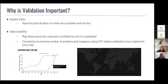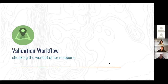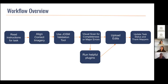Why is validation so important? It is important to check over the work done by other mappers to assure that all data in a task are complete and correct. OSM is built by volunteers of all skill levels coming from different countries, backgrounds, and experiences. While it is a benefit to have such a variety of mappers, it can also result in inconsistent mapping. Validators help correct these inconsistencies while also helping to build the confidence and skills of mappers. These projects are used for humanitarian purposes and it's important that everything is accurately mapped. Without validation, these maps cannot be used with confidence. As projects and new mappers increase, it only makes validation all the more important.